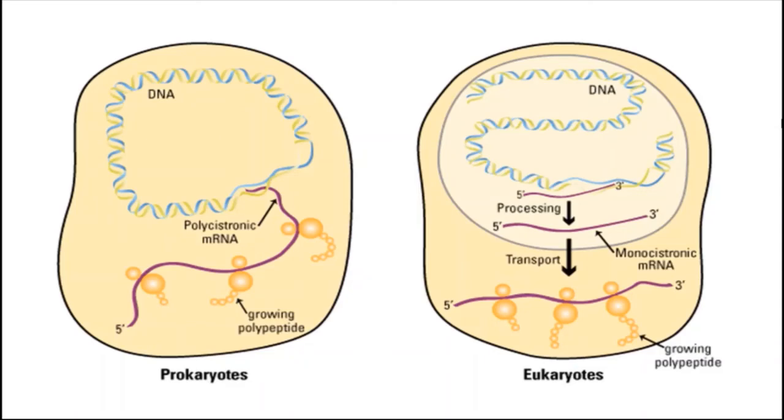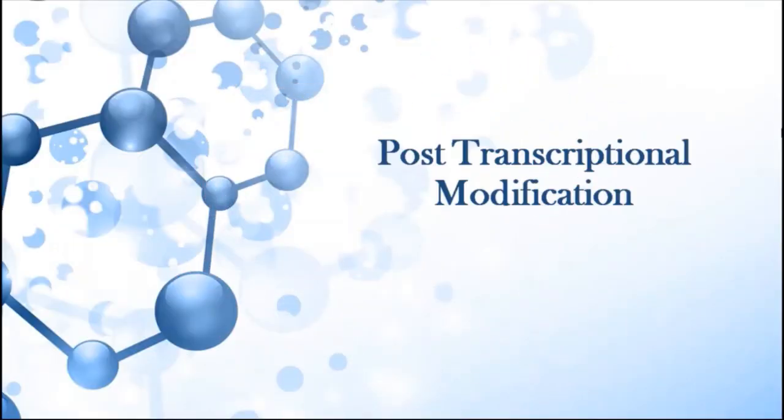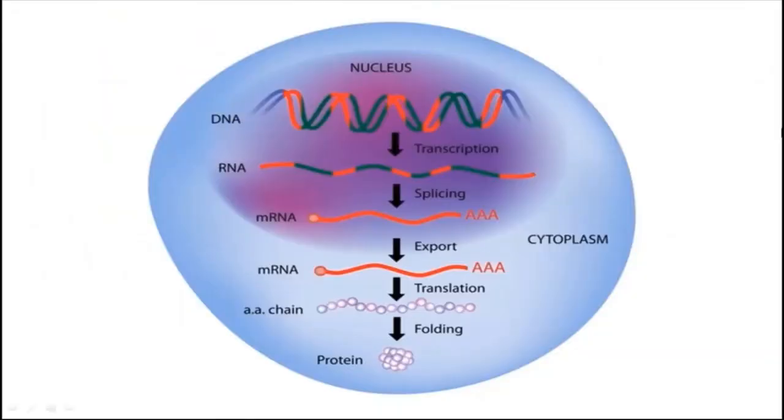RNA needs to undergo through a series of processing called post-transcriptional modifications. It is a set of biological processes common to most eukaryotic cells by which the RNA primary transcript is chemically altered to produce a mature functional RNA molecule that can leave the nucleus and perform varieties of different functions in the cell.